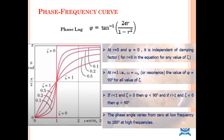From the phase lag frequency curve: when r equals zero, φ equals zero. When r equals 1, resonance occurs (omega equals omega_n) and φ equals 90 degrees. When r is less than 1 and η is not equal to zero, φ is less than 90 degrees. When r is greater than 1 and η is not equal to zero, φ is greater than 90 degrees. The phase angle varies from zero at low frequency to 180 degrees at high frequency.